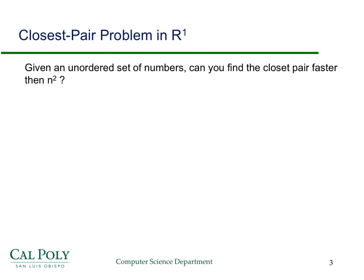Before we get going on R squared, I'd like you to think about how you might do this just in the line, in R¹. Suppose you're given a set of unordered numbers. Can you find the closest pair faster than n squared? Why don't you pause the video and give that a few minutes thought.